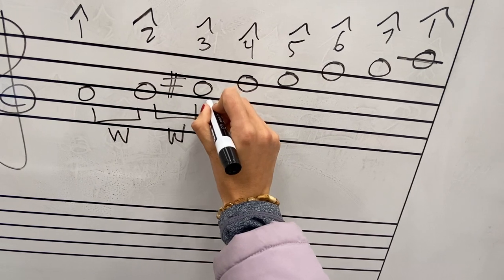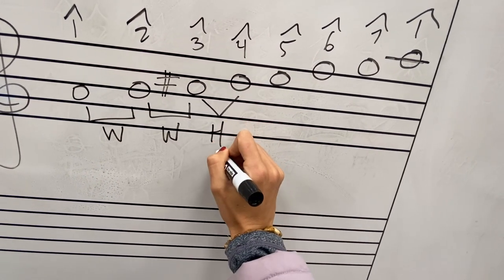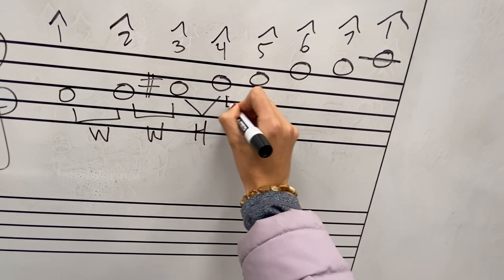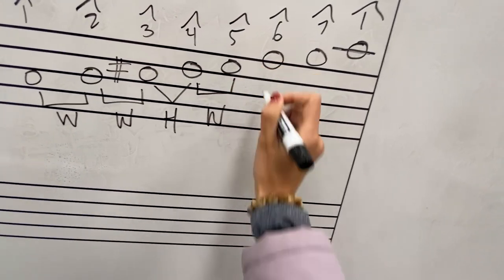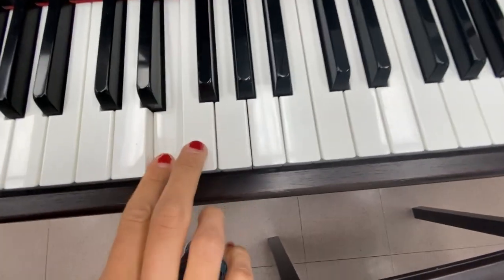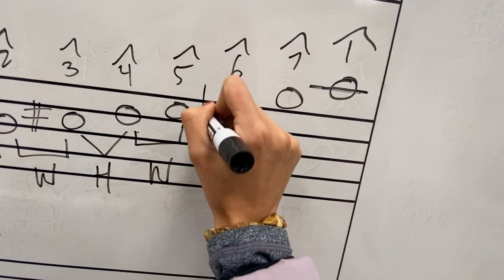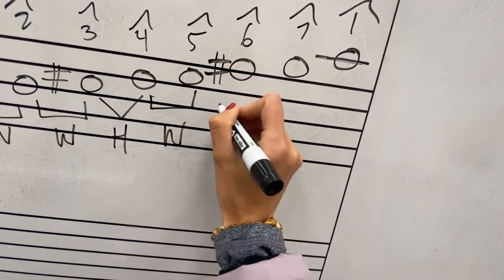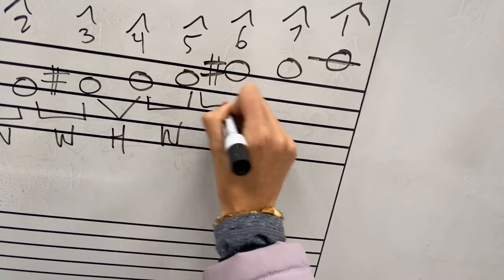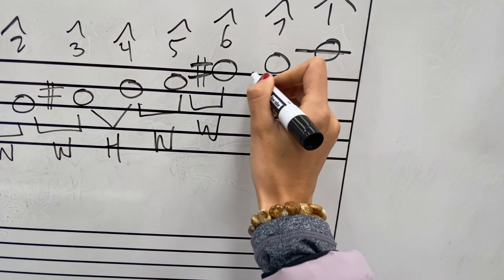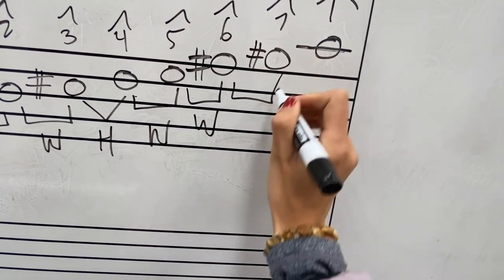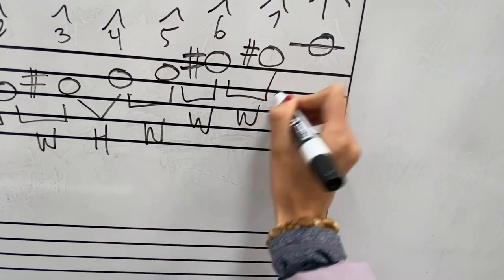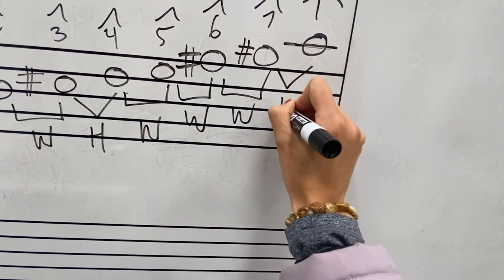And then C sharp to D — is that a half step? Correct, that's a half step. D to E, that should be a whole step. E to F — on the piano E to F is a half step, so we need to raise that pitch, and now this is a whole step. F sharp to G is a half step, so we actually need to raise that to make it a whole step. And then G sharp to A, we have a half step.